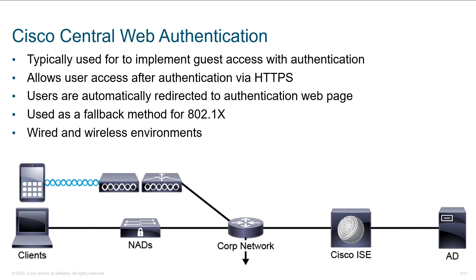Users are going to be automatically redirected to this authentication page via an HTTP redirect. We basically want to authenticate everybody using 802.1x — this is the most secure method. However, if they don't support it, we can fall back to centralized web auth. For wired or wireless clients that failed to authenticate through 802.1x, maybe we tried to do MAB, didn't know the MAC address, and we'll give them guest access.